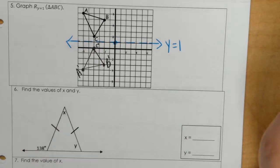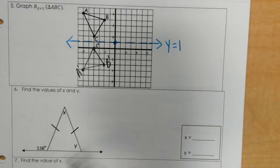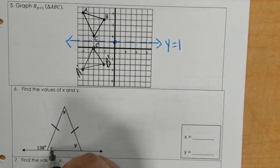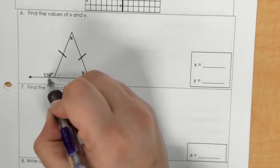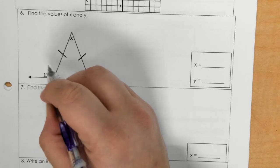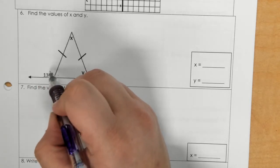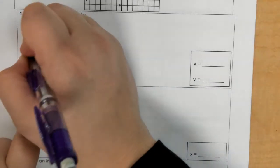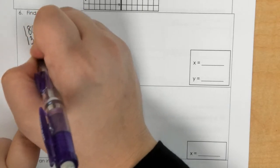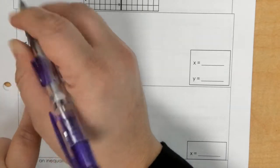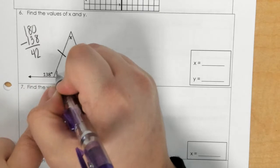And number 6 is find the values of x and y. So to find this measurement first, I need to subtract 180 from 138. So 180 minus 138 would give me 42. So this is 42 degrees.